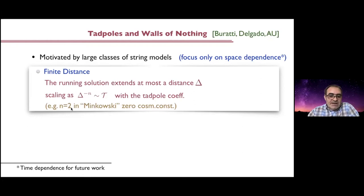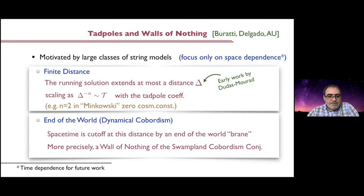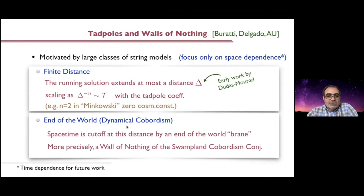This was already observed in a particular example by Dudas and Mourad many years ago in the early 2000s. The second lesson one can learn from these running solutions in string theory is that the singularity encountered at this distance — bounded by Δ — is some singularity typically resolved in string theory by one of these walls of nothing of the cobordism conjecture. The spacetime is cut off at this distance by some end of the world, which could be just the end of the geometry, or decorated with some defects like branes, orientifold planes, or whatever — basically the appearance in a dynamical way of these walls of nothing.